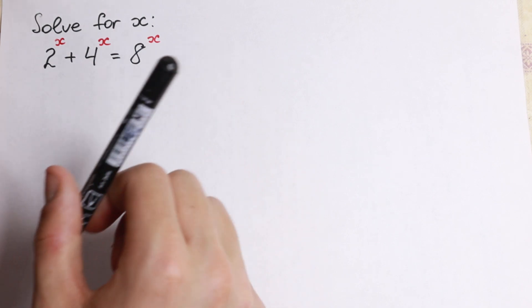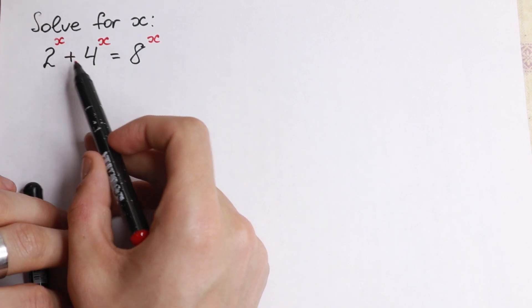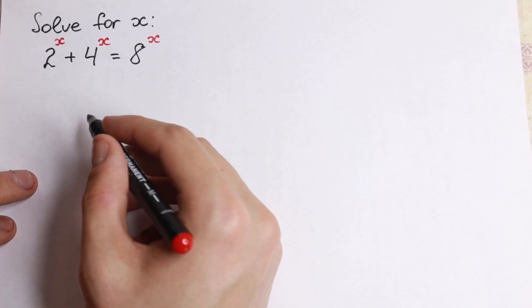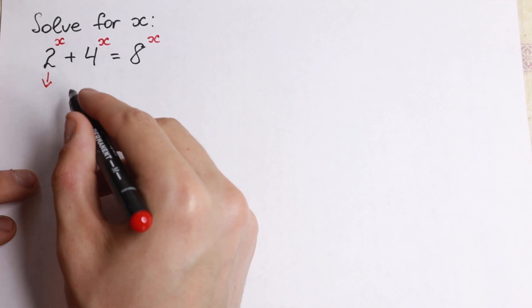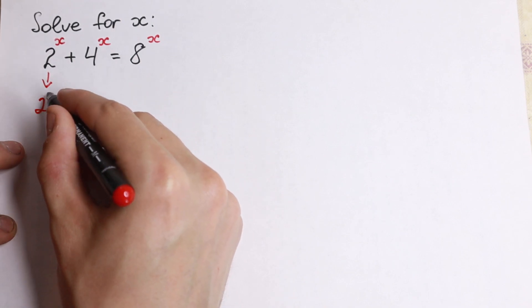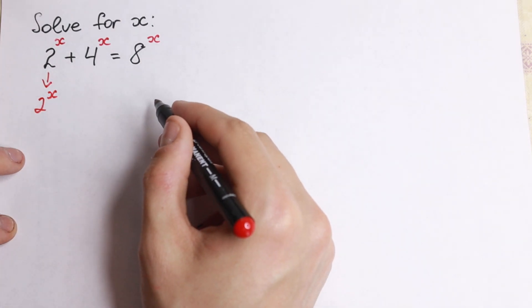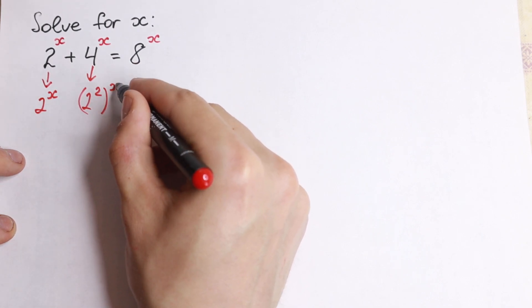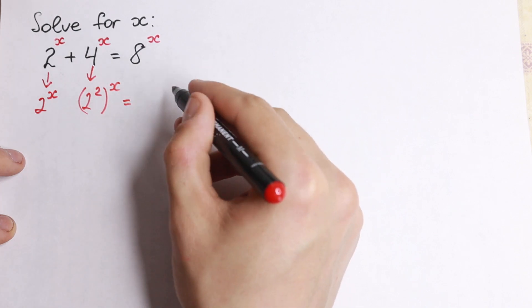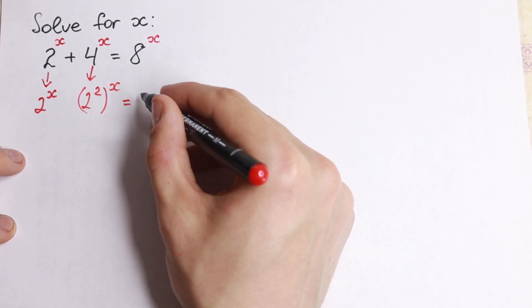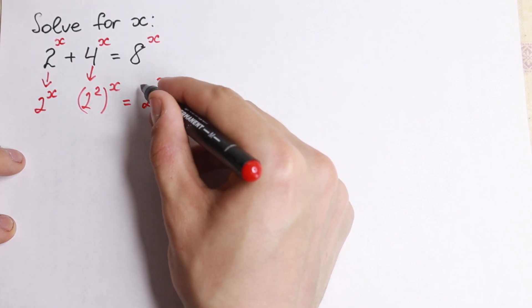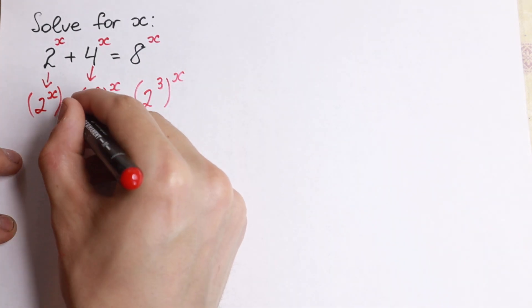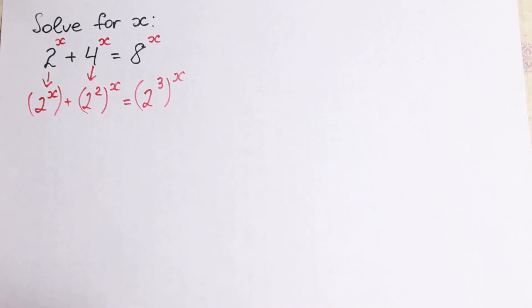We need to simplify this a little bit. Let's write 2 to the x as 2 to the x, and rewrite 4 as 2 squared raised to the power x, and 8 as 2 cubed raised to the power x. So we express everything using base 2: 2 to the x, 2 squared, and 2 cubed.